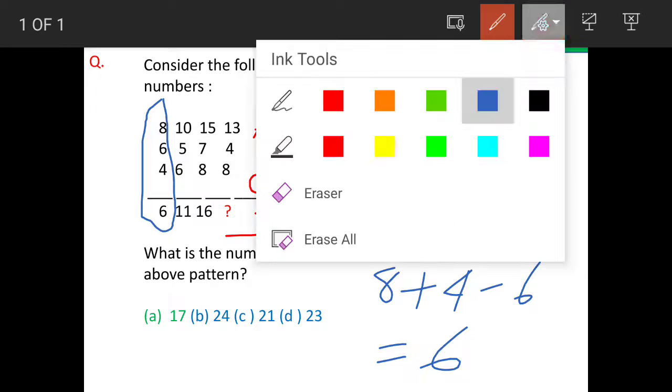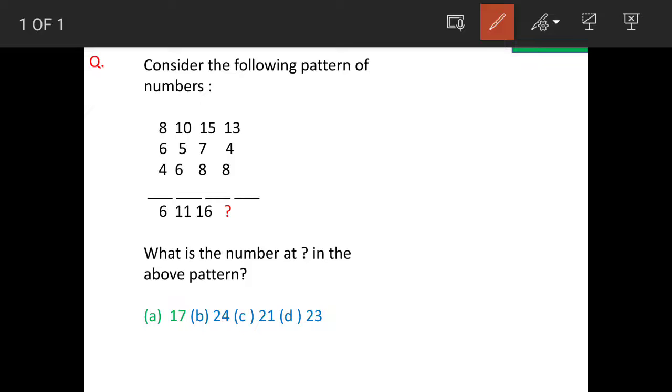So in this manner, if you see the last row, what is going to be the number? 13 plus 8 is equal to 21, minus 4 is equal to 17. So this is your answer, option A.